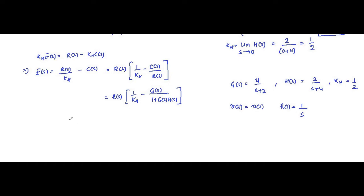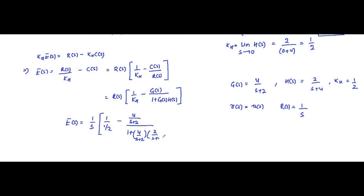We substitute the values into the error signal expression. E(s) = (1/s) times [1/KH minus G(s)H(s)/(1 + G(s)H(s))], which is (1/s) times [1/(1/2) minus (4/(s+2)) divided by (1 + (4/(s+2))·(2/(s+4)))]. Pay careful attention here, because in a hurry you can make miscalculations and the whole error signal expression will become wrong, leading to a wrong steady-state error.